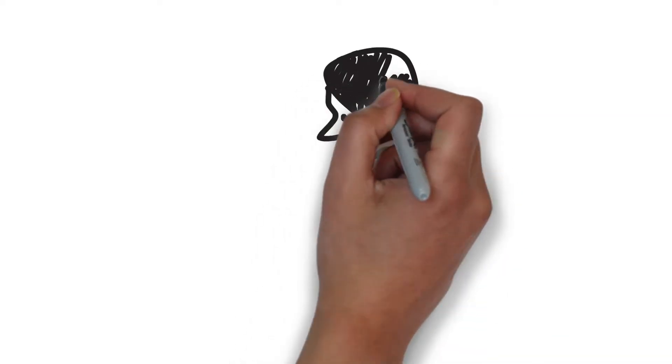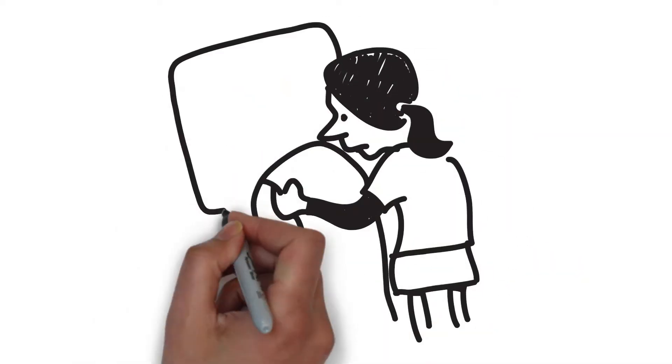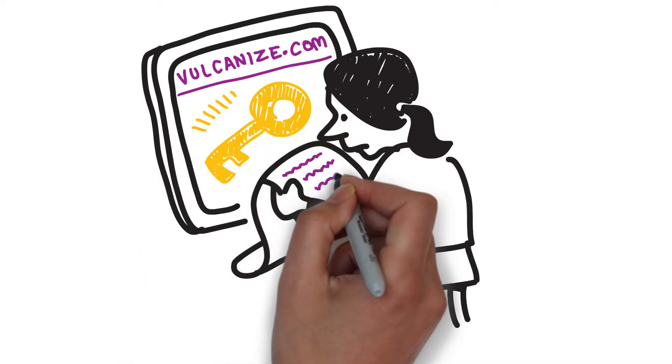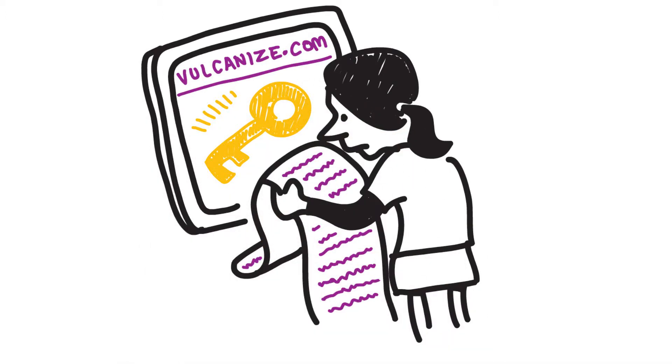When someone visits your site, they receive your public key. They check this key against a list to make sure you are who you say you are. Once they confirm this is a valid key, they agree to use it in the next step. And this is where it gets tricky.